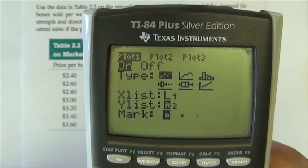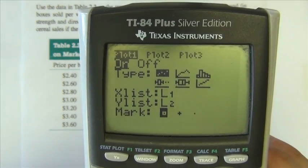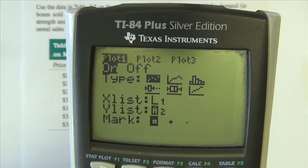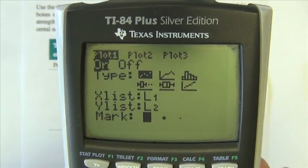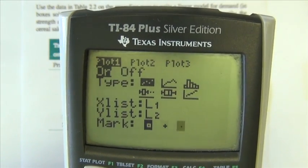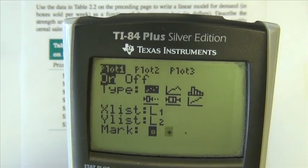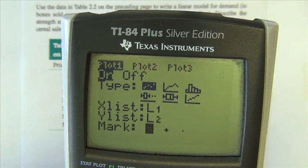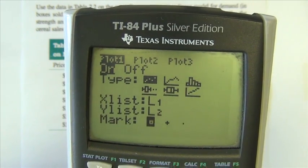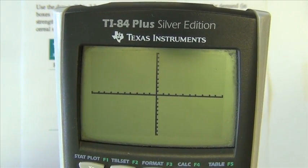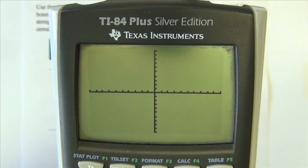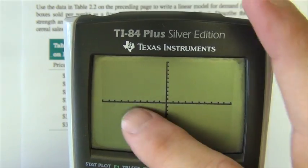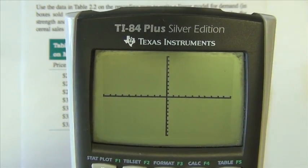Down here you have the option of making the X variable and the Y variable coming from different lists, but by default they're put on L1 and L2. You can make the mark whatever you want - little squares, little plus signs, little points. I'm just going to leave it on little squares. If I hit GRAPH right now, very likely you won't see anything because our numbers in the list don't fit the negative 10 to 10 scale.